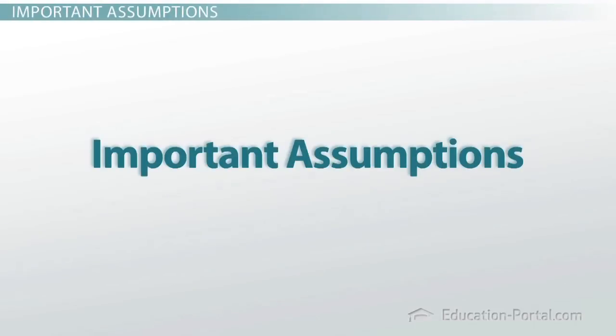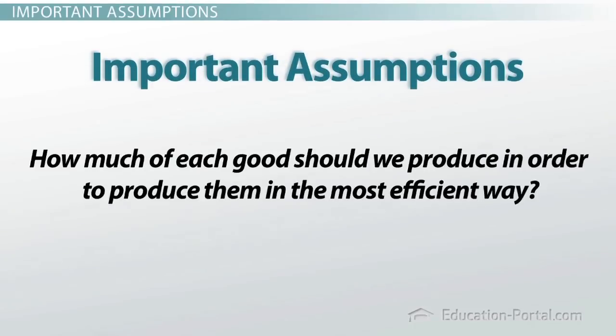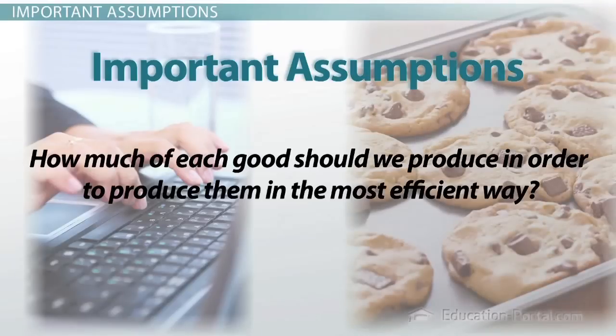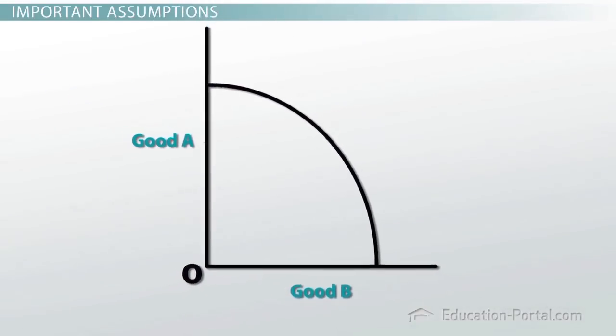There are some important assumptions that we need to talk about regarding the production possibilities model. The question we're trying to answer is this: How much of each good should we produce in order to produce them in the most efficient way? For example, how many term papers and cookies should I make to get the most efficient combination? Or, how much corn versus how much beef should country A produce to be the most efficient? That's where the production possibility model comes in.